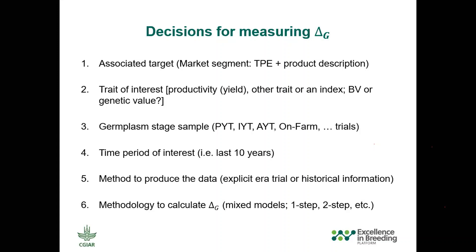Point four: you need to think carefully about which period of time you are interested in examining. It's not just something random — you may want to check how it's behaving in the last 10 years, or the last five. You may want to identify how the trends are changing — maybe at some point they were linear and now they are not. Point five: how you will produce the data to monitor the progress is highly critical. You can run explicit error trials to generate that information, or you can rely on historical trial information to calculate the metric.